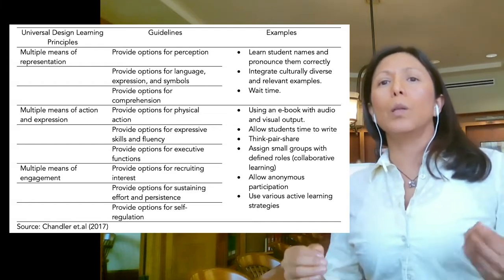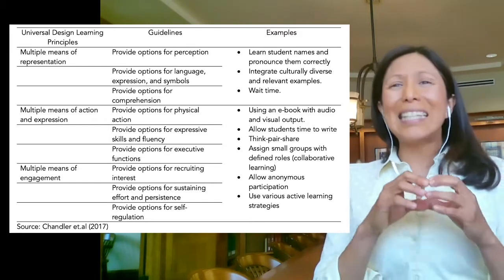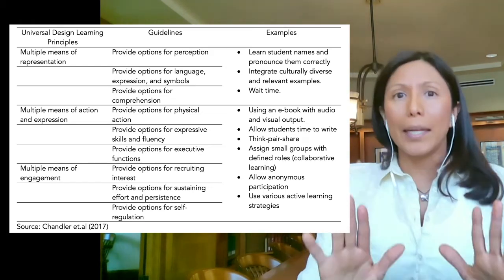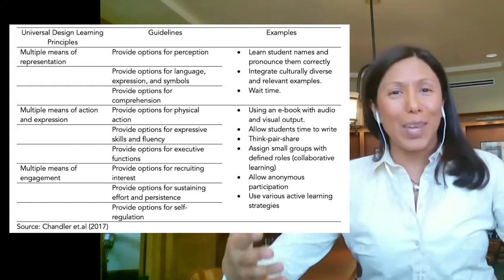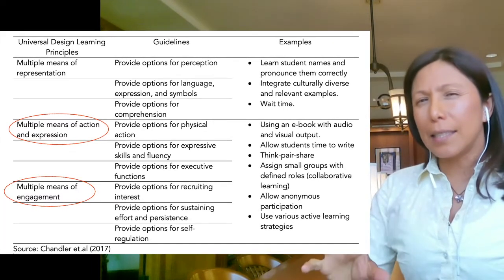Let me give you some examples. Multiple means of representation would be, for example, learning students' names, pronouncing them correctly, integrating culturally diverse and relevant examples that sometimes in our economics textbooks are missing, and waiting time when you make a question so that people have time to think about the answer. About multiple means of action and expression and multiple means of engagement, there's an excellent example: using an electronic book. A deaf student can read and see the graphs and the description, while a blind student can listen to the book, or the very busy student can listen to the book while driving. Also, assign small groups with defined roles, also known as collaborative learning.